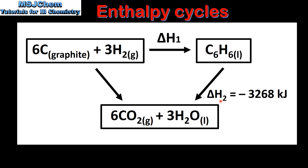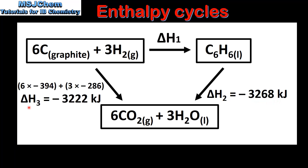The value of delta H2, which is the enthalpy change of combustion for benzene, is negative 3268 kilojoules per mole. Delta H3, which is the sum of the enthalpy change of combustion for six moles of carbon and three moles of hydrogen, is negative 3222 kilojoules.